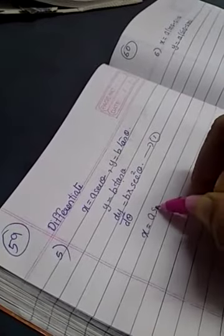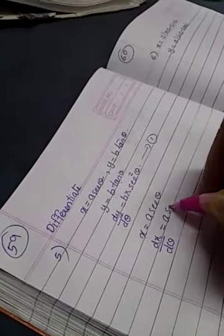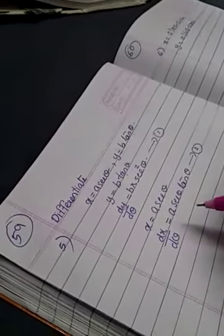Again, take x. x = a sec θ. Differentiate x with respect to θ. So, dx/dθ = a is a constant and derivative of sec θ is sec θ tan θ. If needed, you can put it as equation number 2.